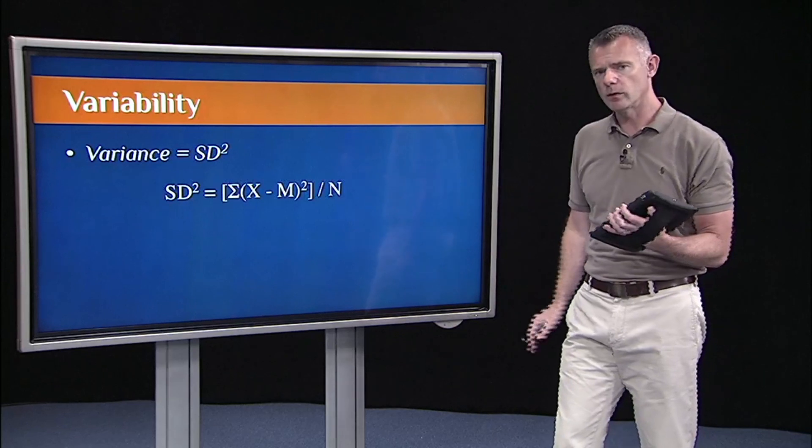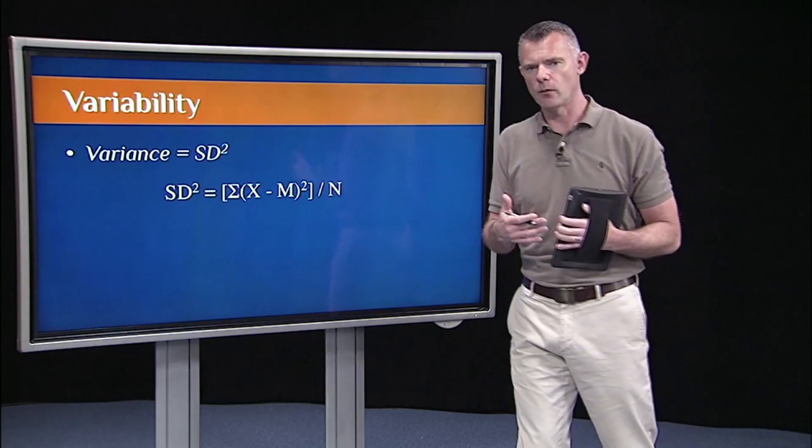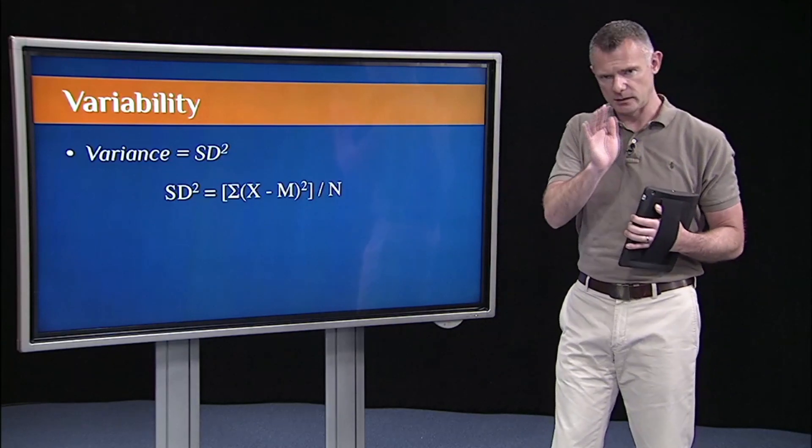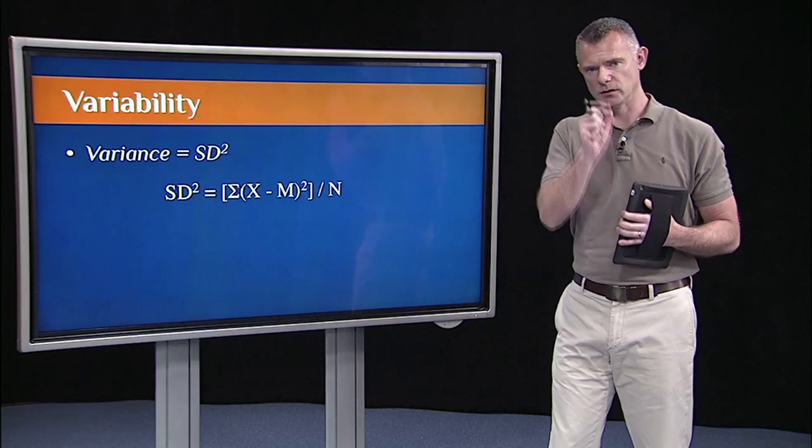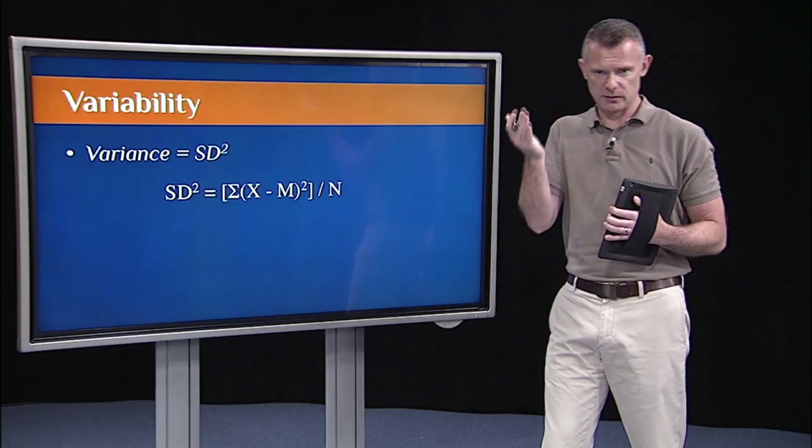So this is an important formula to know. I'm assuming that most of you already knew the formula for a mean. And if you didn't know it already, it's all right. It's easy to remember. It's just the sum of the scores divided by the number of scores, so sum of X divided by N.